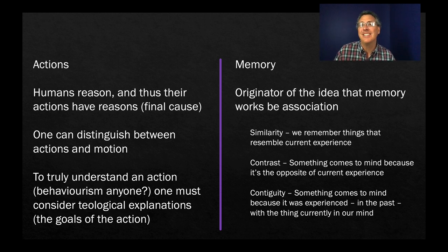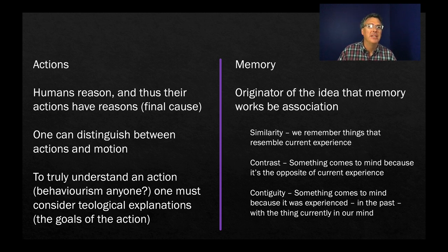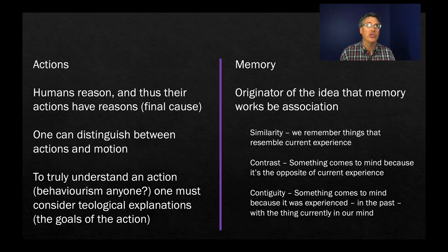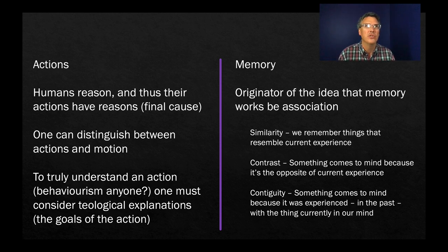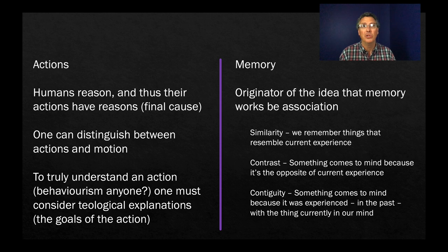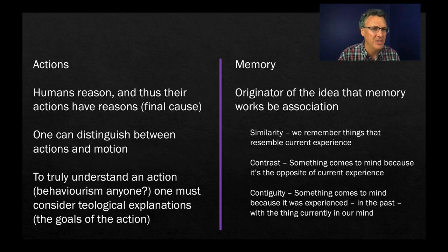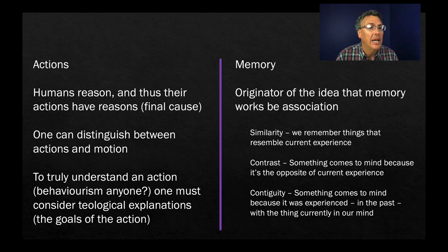Other things Aristotle is known for that are relevant to psychology: because he believed in human reason, he thought the actions humans engage in are done for a reason. He called it a final cause — some goal, or what we'd now call a goal state. The reason you get out of bed and go to university, or watch this video, is because there's something you're hoping to get out of it. He was big on what we might call goal-directed behavior.